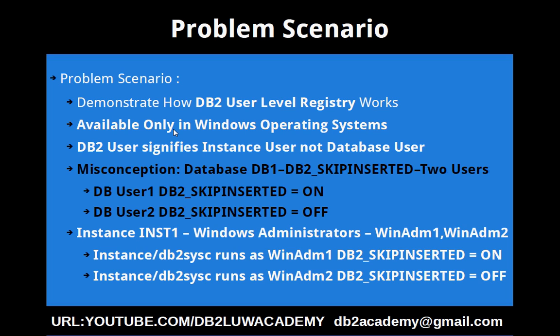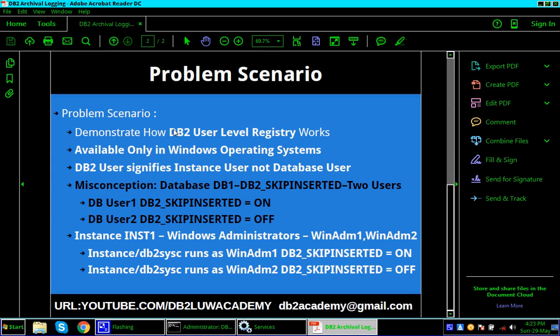The correct version is highlighted in white. So let's say there is an instance INST1 under which there is a database DB1, and we are talking about the same registry variable DB2_SKIPINSERTED, and there are two Windows administrators: WinADM1 and WinADM2. Now the DB2 process or the instance can be run under user WinADM1 or WinADM2. If it runs under WinADM1 then that registry variable will be set to ON; if it is running under WinADM2 then the registry variable will be picked up as OFF. So this is how we should interpret it — that is the learning. Let us get into a demo and it will be somewhat easier to understand.